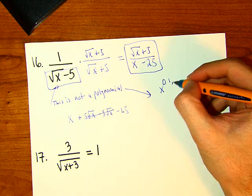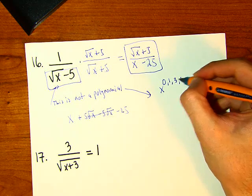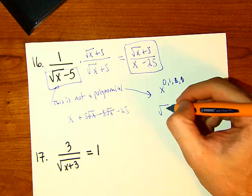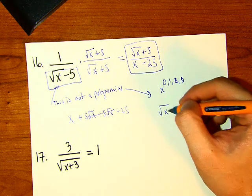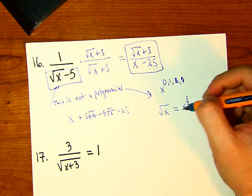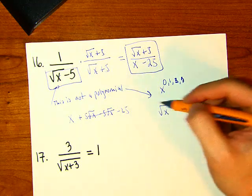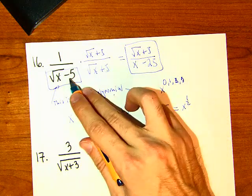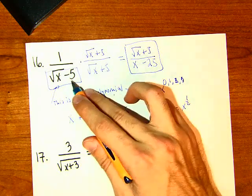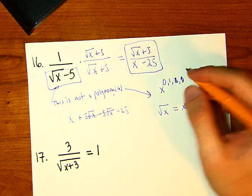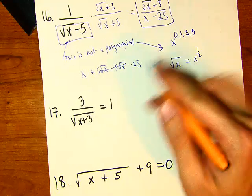For something to be a polynomial, the exponents on x must be whole numbers. Square root of x is x to the one-half, and by definition that is not allowed. If it's not a polynomial, it's not a rational expression. It's a technical subject — so that's it, we just rationalized the denominator.